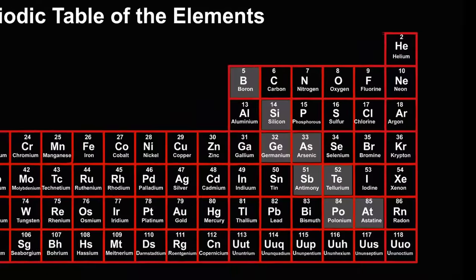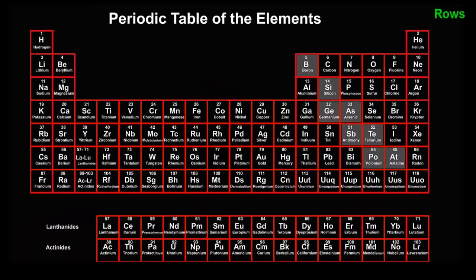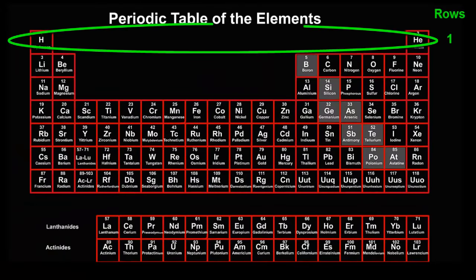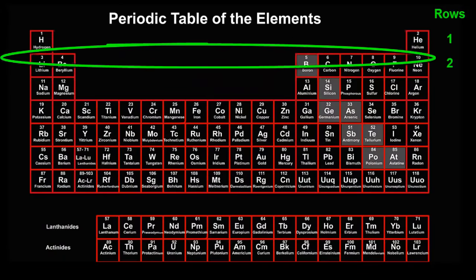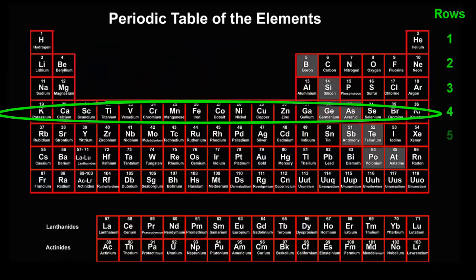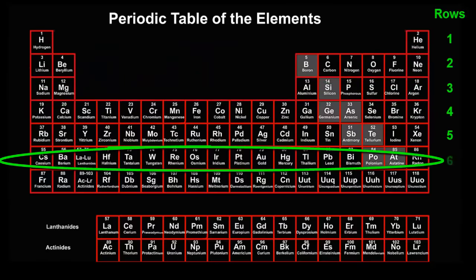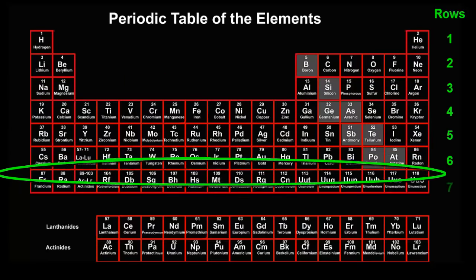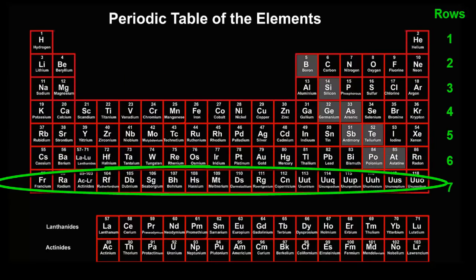How many rows are there? 1, 2, 3, 4, 5, 6, 7. The periodic table has 7 horizontal rows.